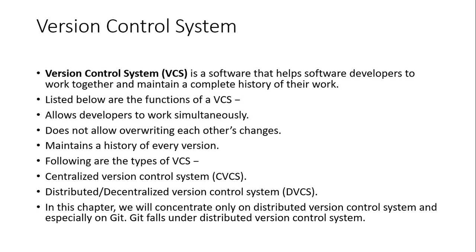This is a history of the code. If you want to undo a mistake, we can use the Git history. If you have a bug in a system, you can use the details of the version control system to trace it.